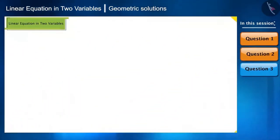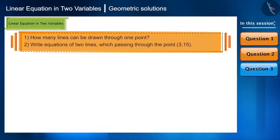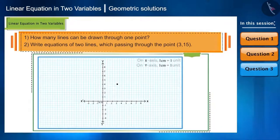Now let's look at the next question. Explain how many lines can be drawn through a point and also write equations of two lines passing through the point 3, 15. First of all, infinite number of lines can be drawn through one point.